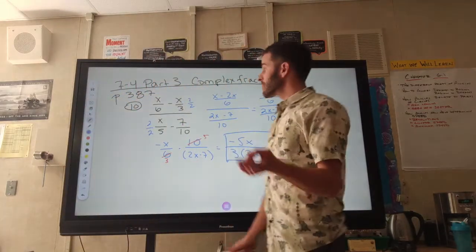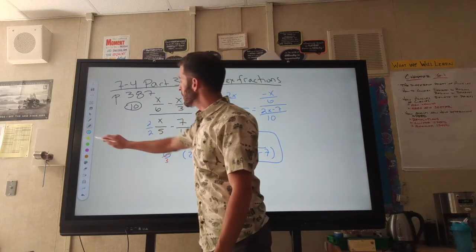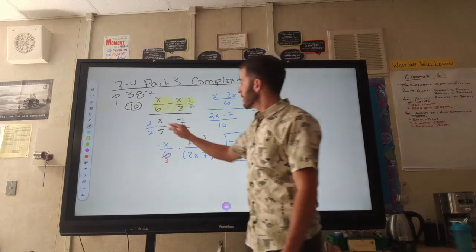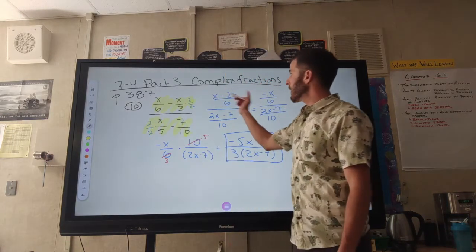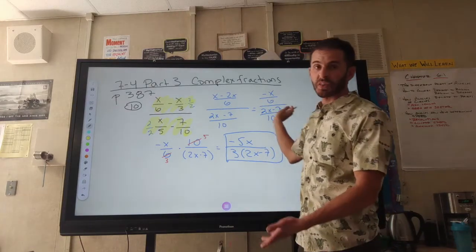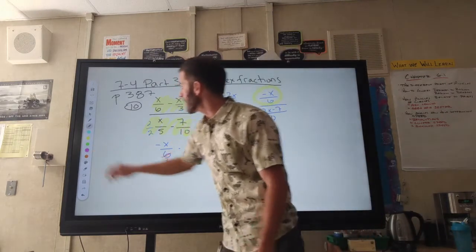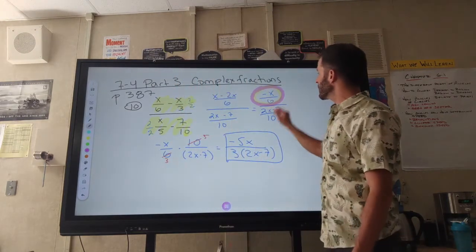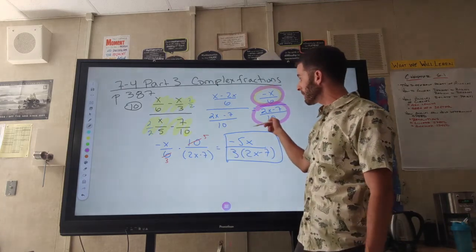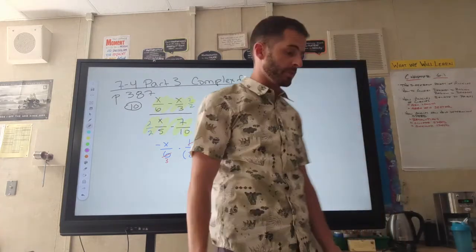For your notes: sometimes when you get complex fractions, you want to deal with the numerator separately from the denominator. That way you can get one simplified fraction on top and one on the bottom. Then, once you have a fraction on top and a fraction on the bottom, multiply by the reciprocal of the one on the bottom. Go ahead and simplify if you can, put them together, and do one last check for simplification.